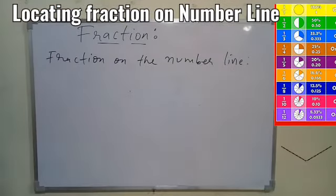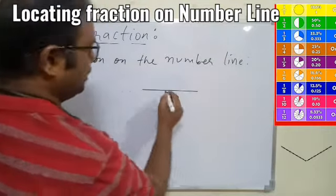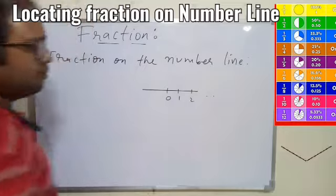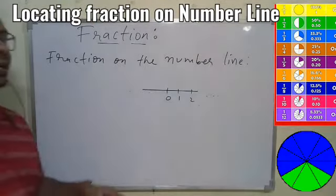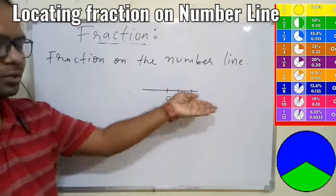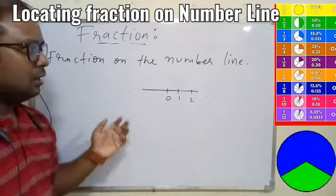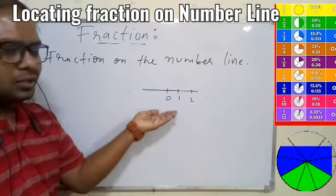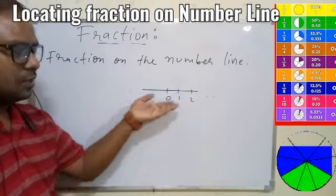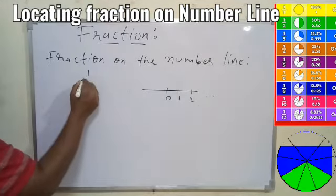If you are given a number line with 0, 1, 2 and so on, we can easily find out where whole numbers are — 1, 2, 3, 4 — and also negative integers like minus 1, minus 2. For whole numbers or negative integers it is not a difficult task, but if we are getting a number in fraction form, then we need to understand how to show it on the number line.